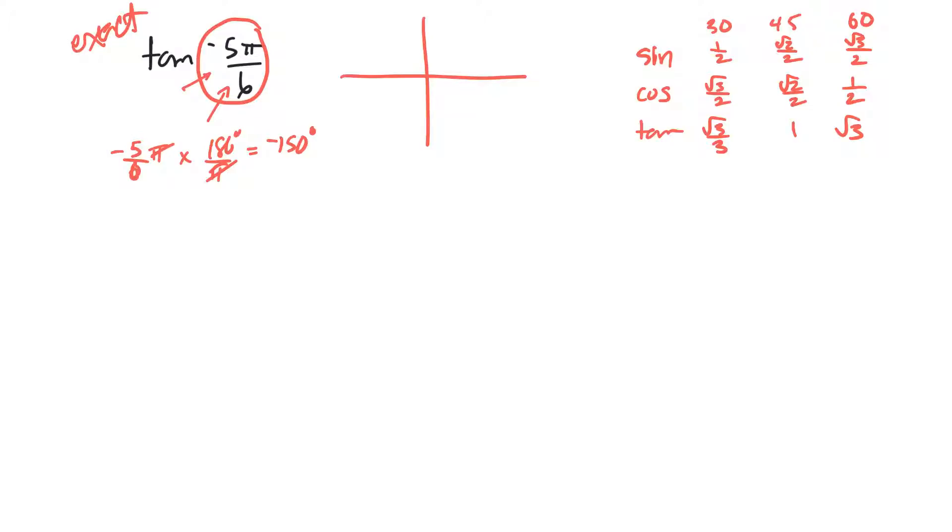Okay, so tan of negative 5 pi over 6 is the same as the tan of negative 150 degrees. Now, a negative angle is one that goes down from, here's our starting line here, and it goes down, those are negative, instead of going up, which are positive angles.